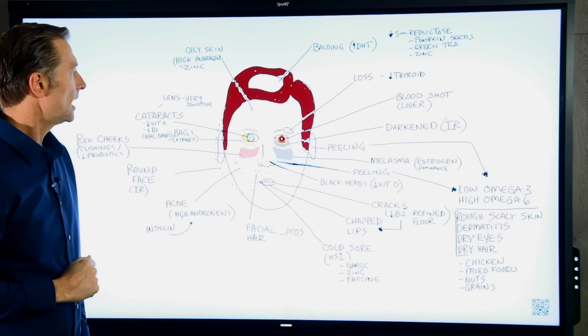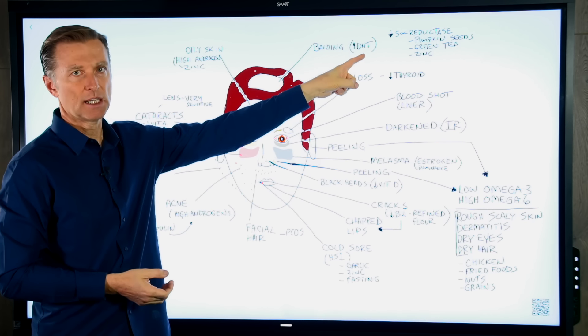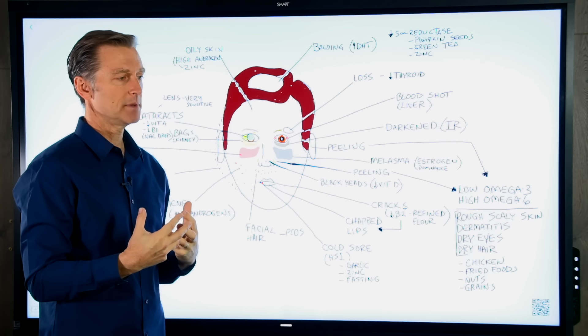Alright. So let's take a look at what's going on here. Let's say you're balding, right? Usually a loss of hair on the top part of your head means you have too much DHT. DHT is a very powerful form of testosterone that is occurring because there's this enzyme that is converting testosterone into DHT at a higher level than it should be.